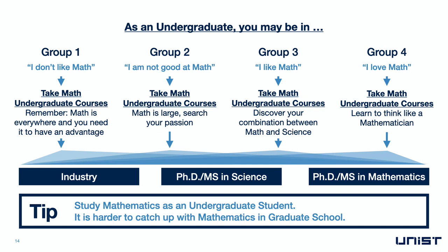In the third and fourth groups, you may be a student who generally likes maths or you are a student who really loves maths. For you, you should take mathematics courses as an undergraduate in order to further appreciate the tools available in pure mathematics and how they are used in applied mathematics. Whatever group you are part of, mathematics provides the largest selection of career options amongst any of the natural sciences — either a PhD or master's degree in mathematics, a PhD or master's degree in the natural sciences, or a career in industry. A big tip: study mathematics as an undergraduate because in graduate school, it is harder to catch up with mathematics.